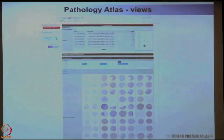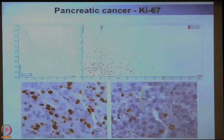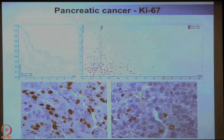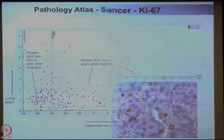We also show all the immunohistochemical data with full-resolution images — this is pancreatic cancer and ki67. The Kaplan-Meier curve here has a cutoff set not at the median but at the best highest significance, the lowest p-value. This is exactly the same data as the scatter plot, and I will show you what this scatter plot is.